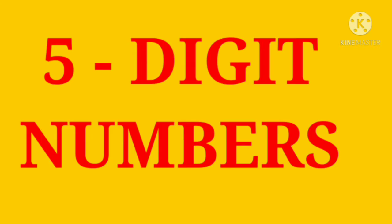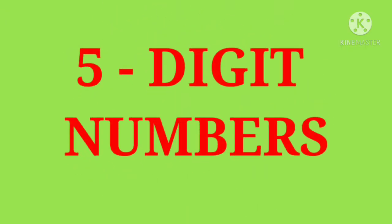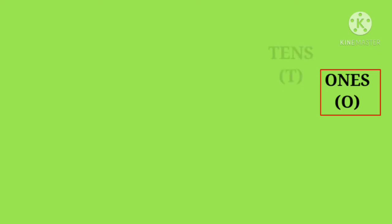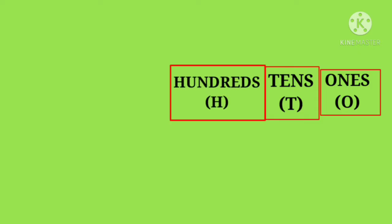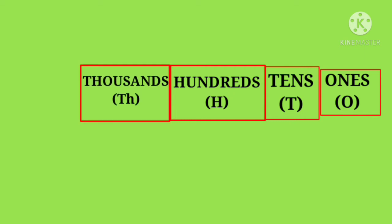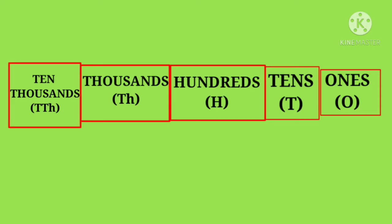5-digit numbers. 5-digit numbers should have 5 place values. Starting from 1s (O), then we have 10s (T), followed by the 100s place (H), then the 1000s place (Th), and lastly the 10,000s place (TTH).